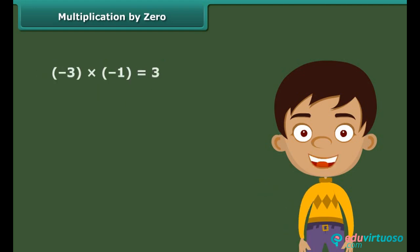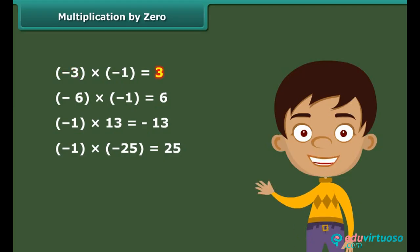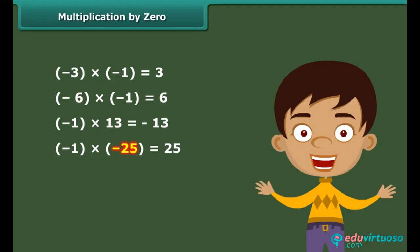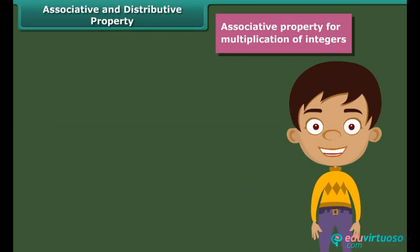When we multiply any integer by −1, we get the additive inverse of that integer. For example: −3 becomes 3, −6 becomes 6, 13 becomes −13, and −25 becomes 25. The product of three integers does not depend upon the grouping of integers — this is called the associative property for multiplication of integers.